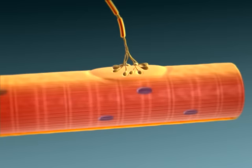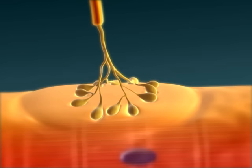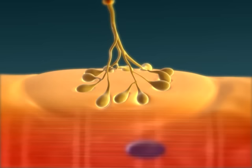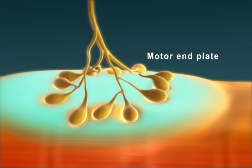The site where a motor neuron excites a skeletal muscle fiber is called the neuromuscular junction. This junction is a chemical synapse consisting of the points of contact between the axon terminals of a motor neuron and the motor end plate of a skeletal muscle fiber.